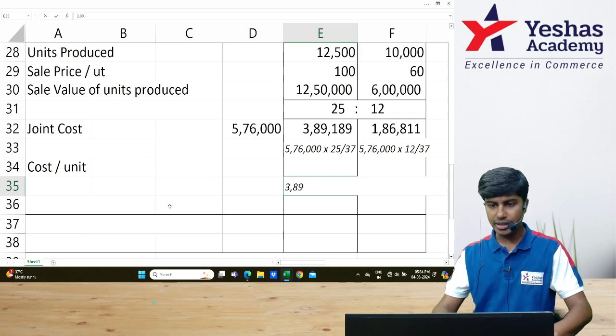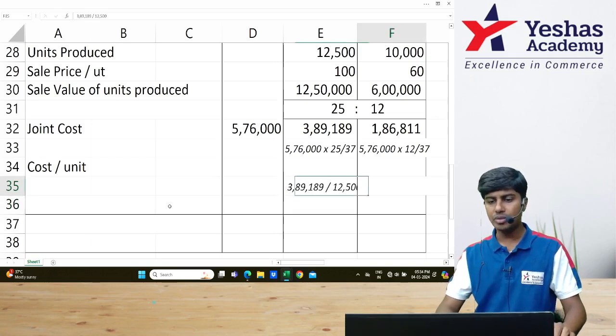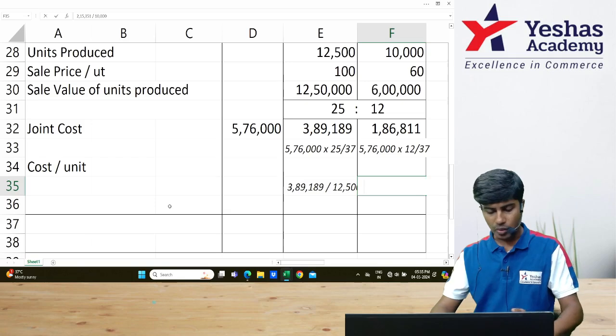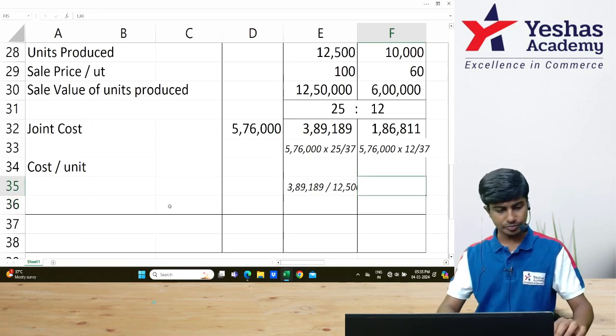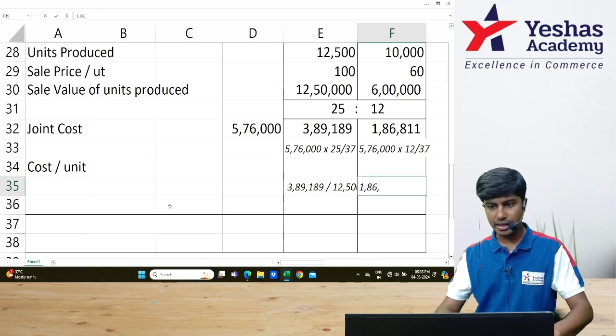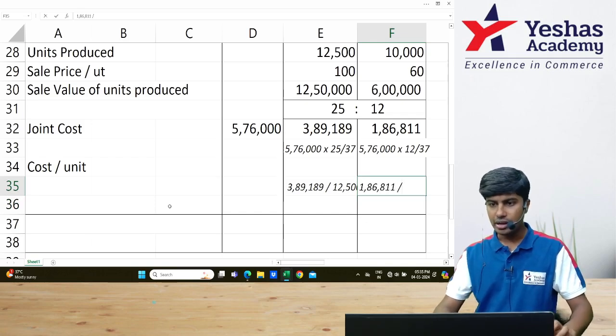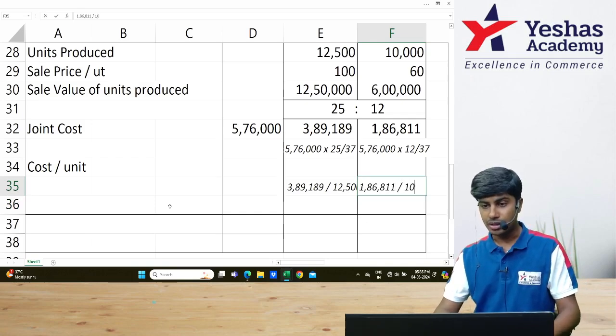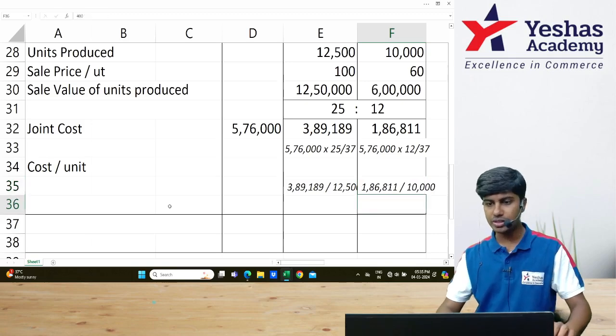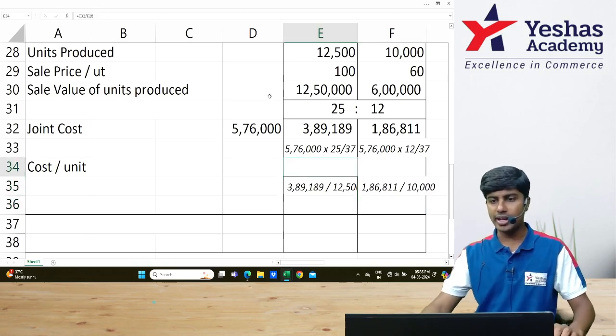I will divide ₹3,89,189 by 12,500 units. Similarly, I will divide ₹1,86,811 by 10,000 units. When I divide them, what do I get as cost per unit?